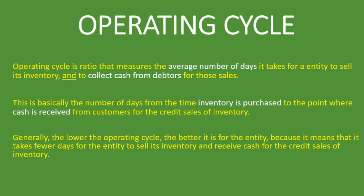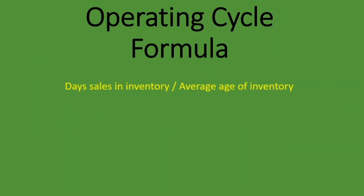So the lower this ratio is, the better it is generally — it means you take fewer days to sell the inventory you purchased and receive money for the credit sales. The formula for the operating cycle is very simple: it's the day sales in inventory, also called the average age of inventory, plus the debtors or average collection period. Just add those two together — the day sales in inventory plus the average collection period — and that gives you the operating cycle ratio.